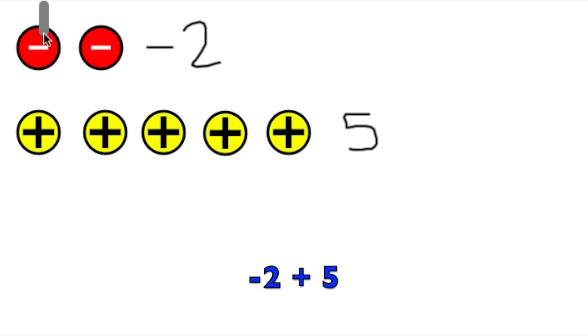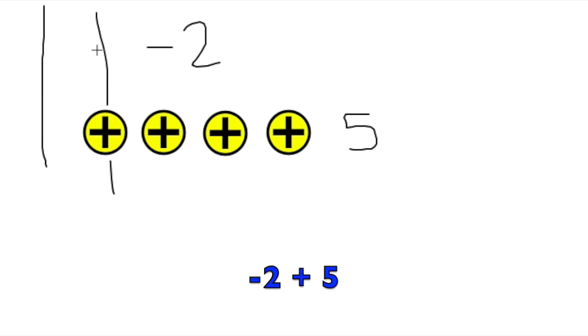Positive and negative chips don't like each other. They cancel each other out and become 0. So that negative and positive becomes 0, and that negative and positive becomes 0. I can remove these chips because they add up to 0, leaving only 3 positive chips. So negative 2 plus 5 is positive 3.